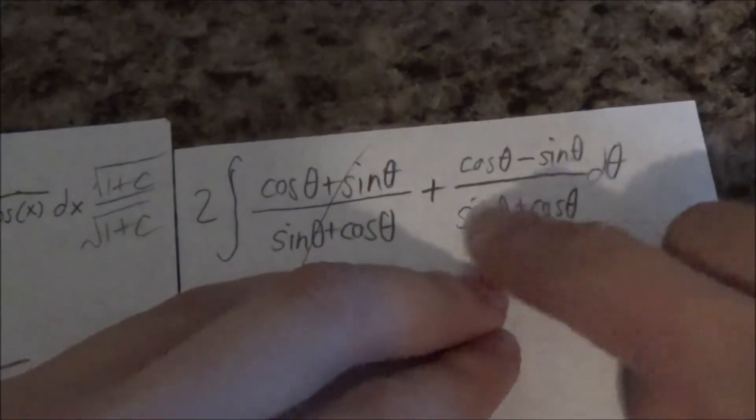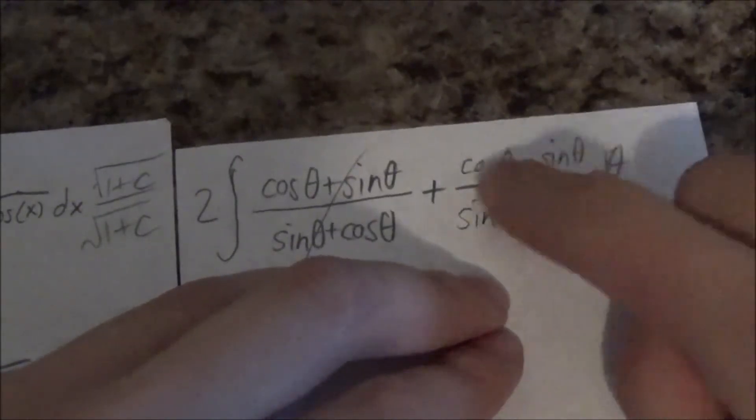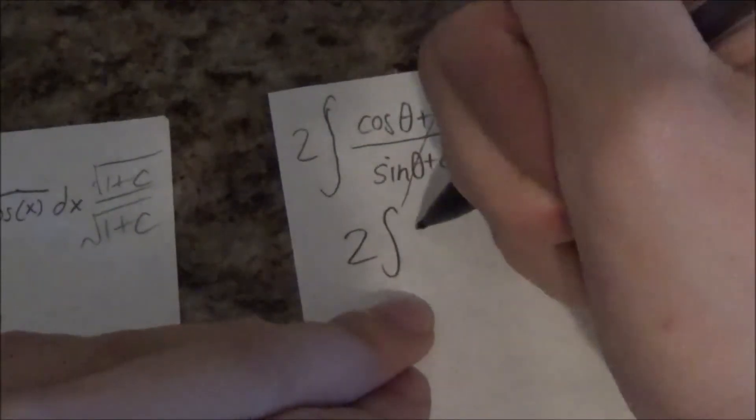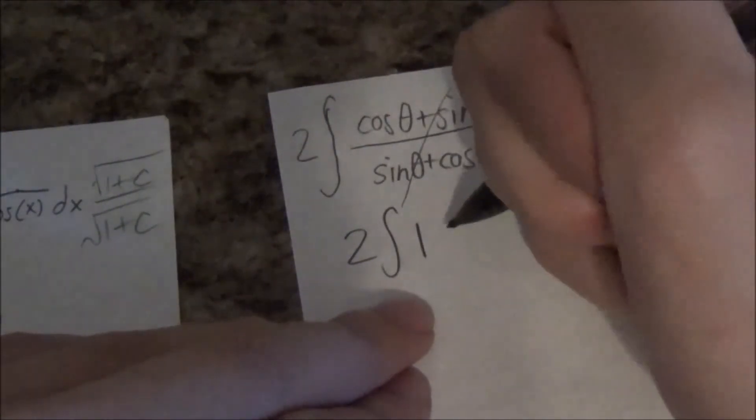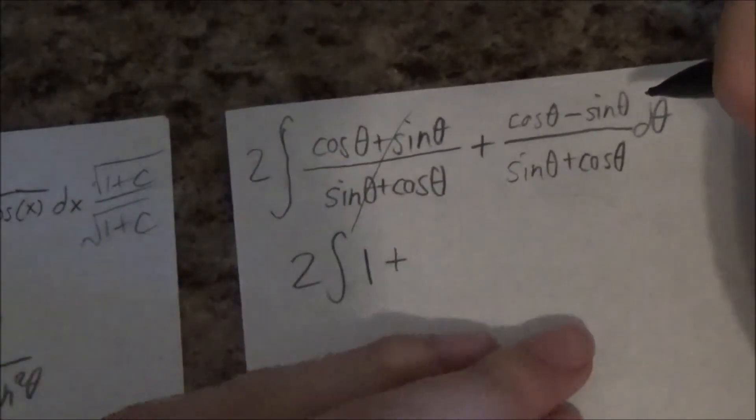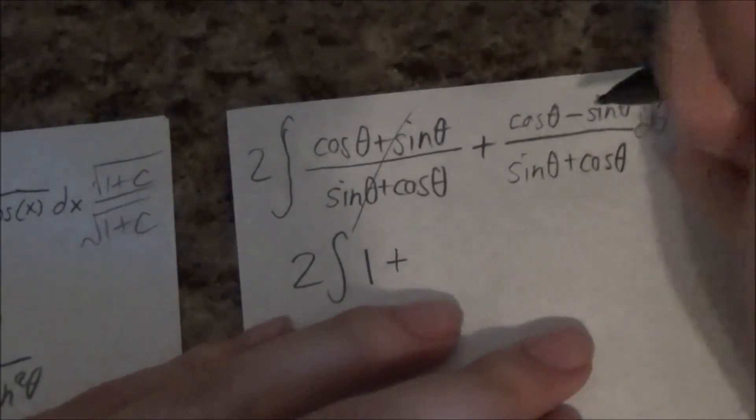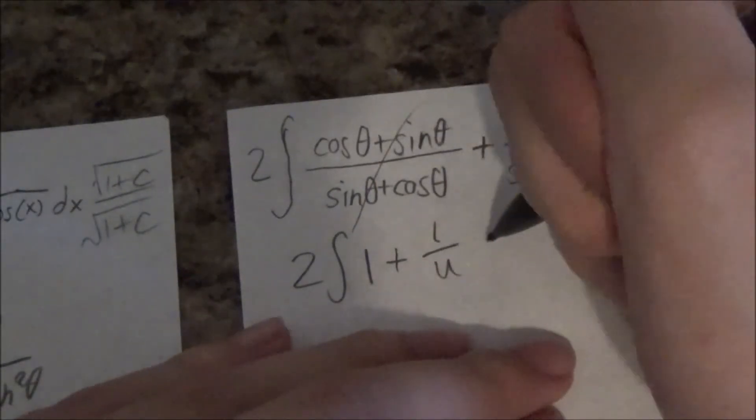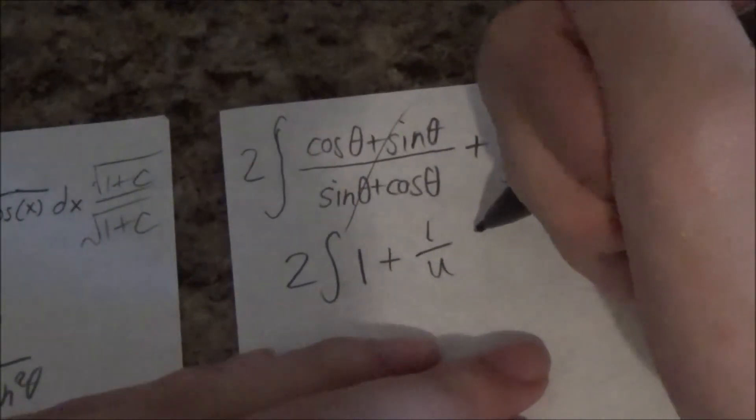Holy mackerel! What is this? Well this is just one. This is a u substitution where you just let u equals this whole thing and the derivative is this whole thing. And so you get one plus one over u.